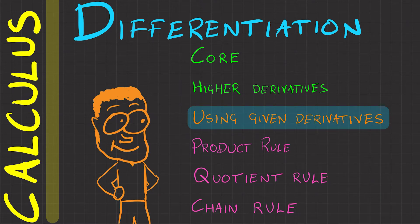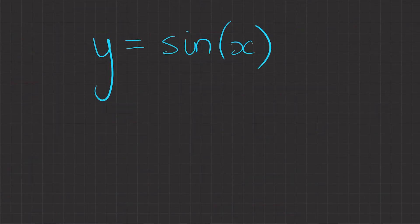Differentiation using a table of given derivatives. Now at this point I'm assuming you know the basics of differentiation, but what if you get something like y equals sin x? These are tricky to differentiate normally, so luckily the mathematicians have done all the hard work for us and given us a table of derivatives.